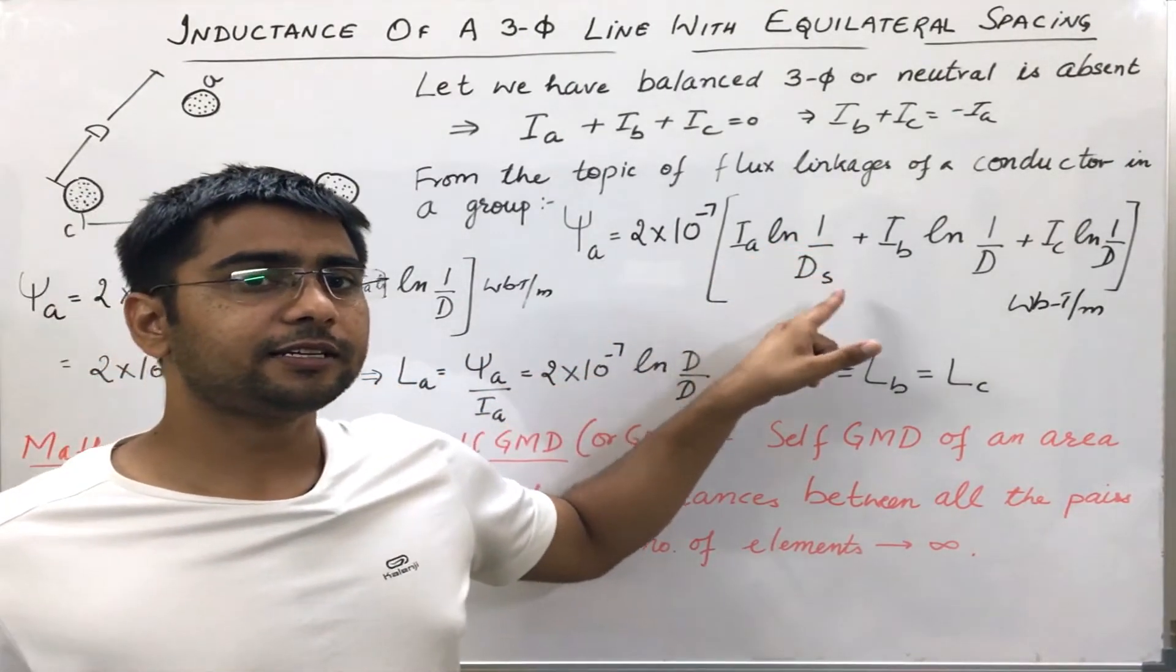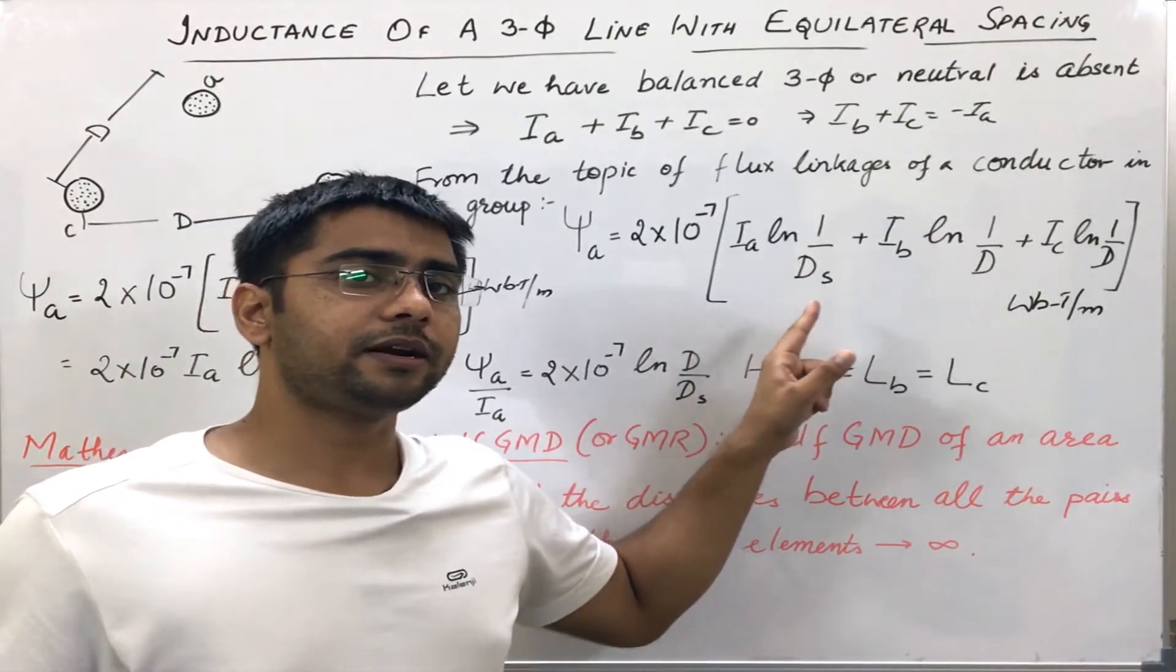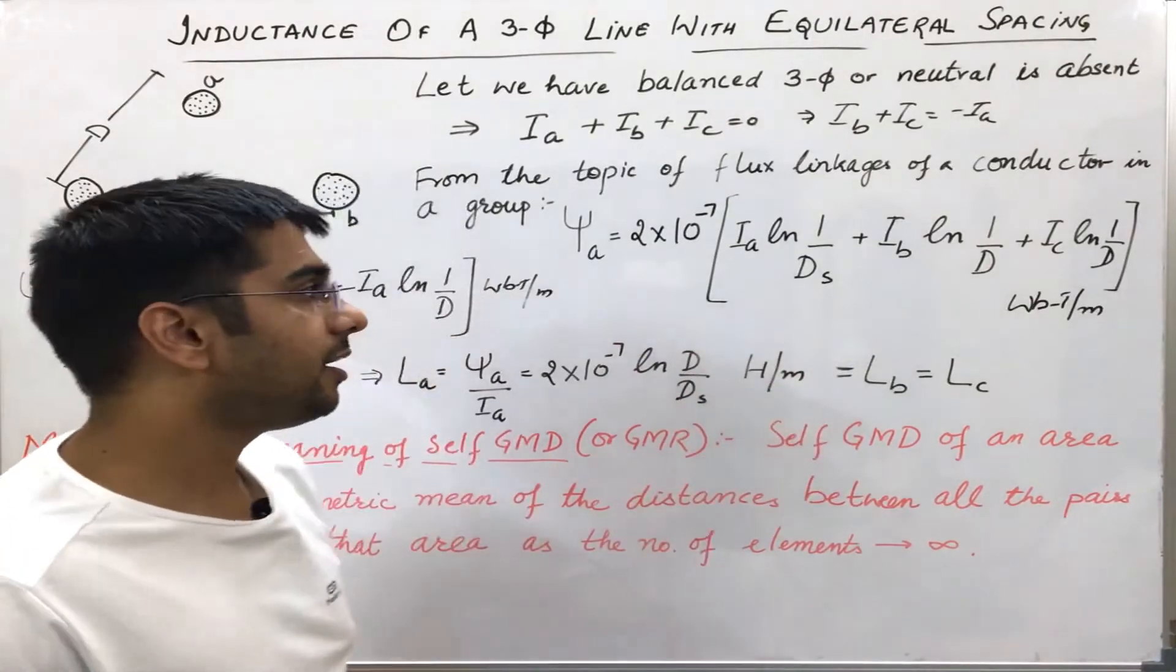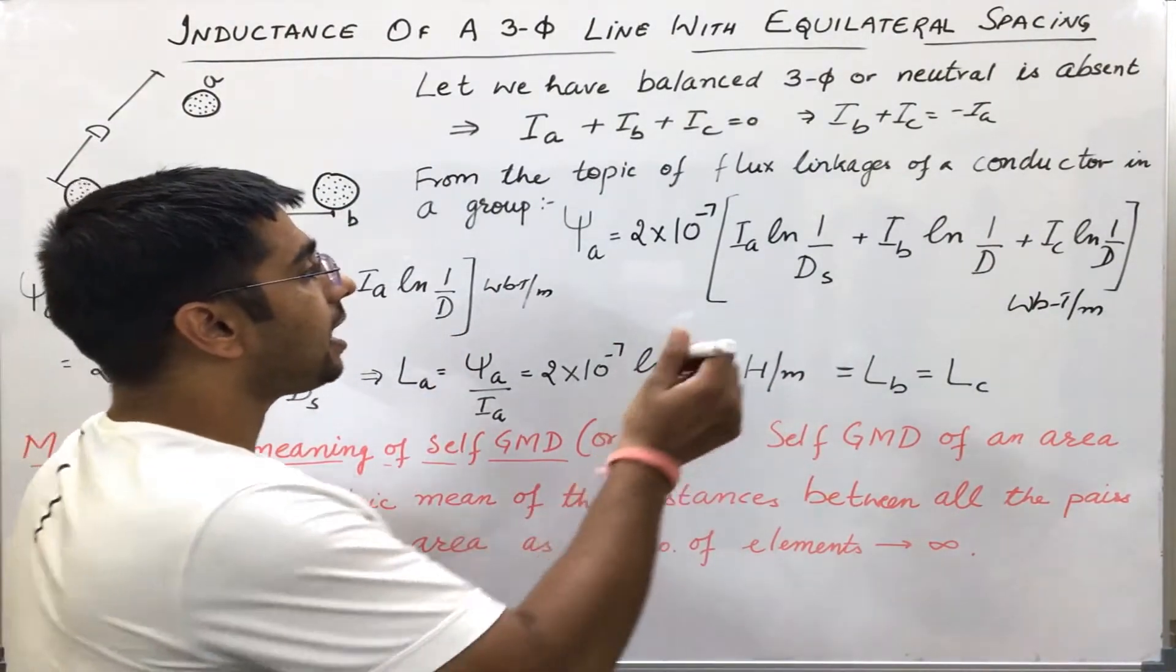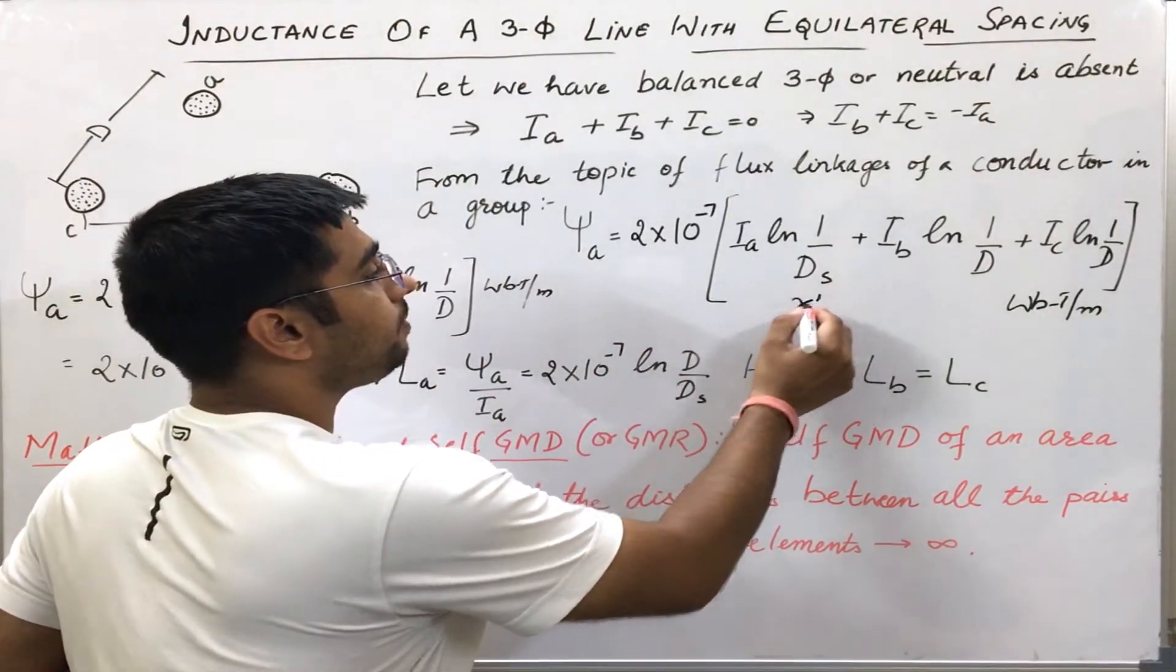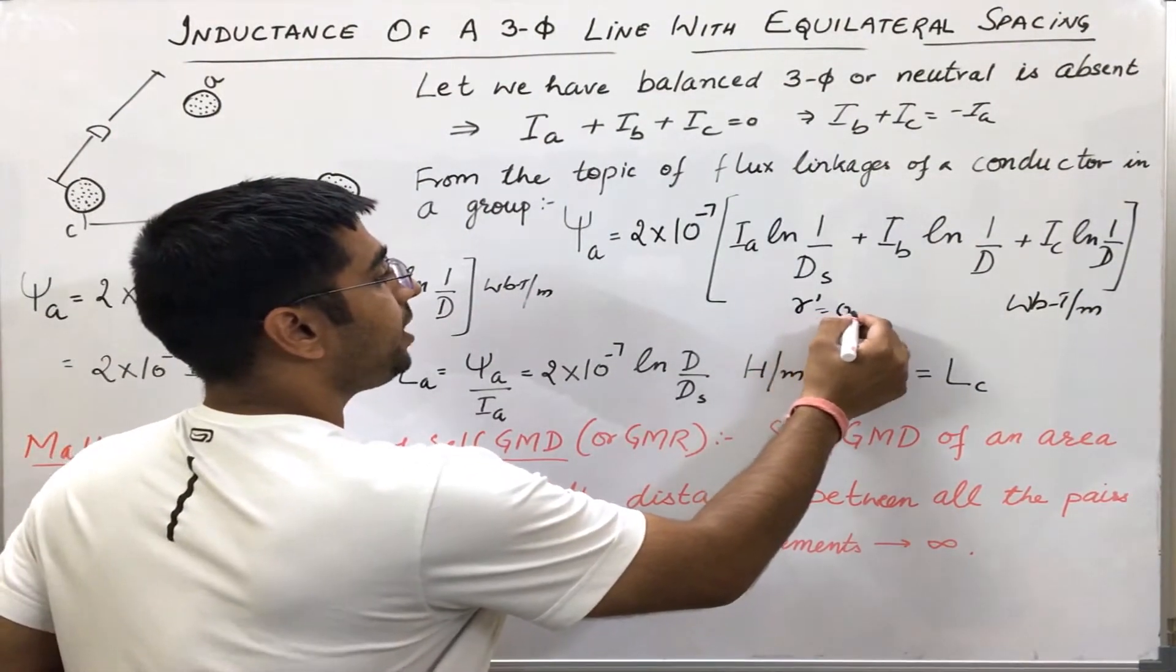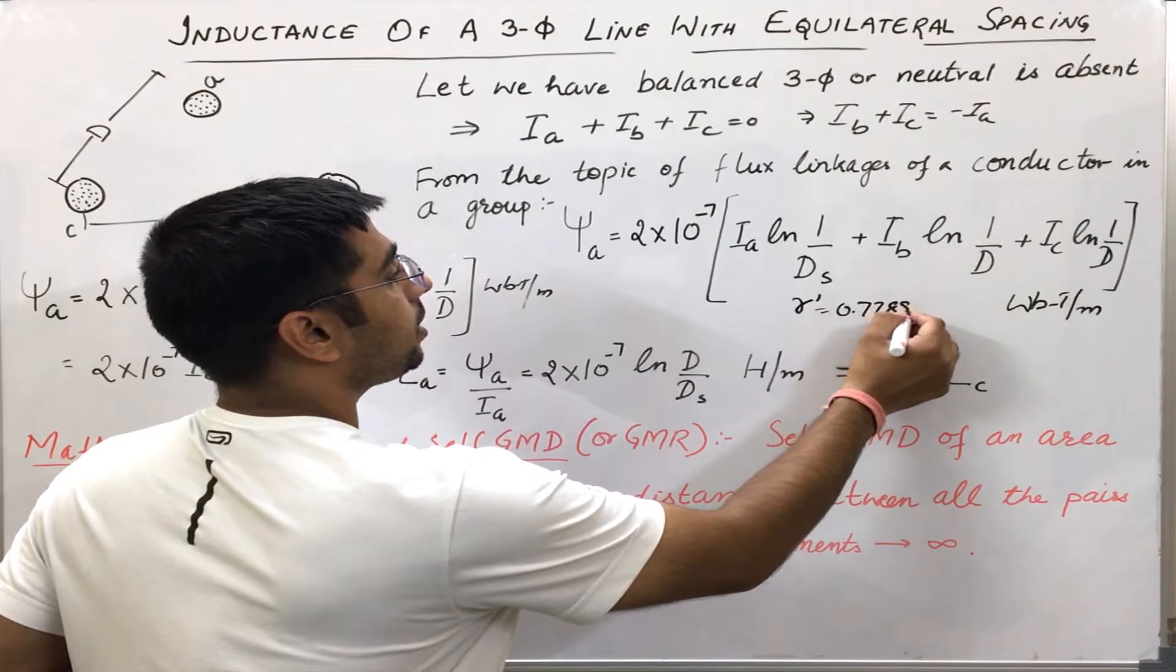ds is simply the geometric mean radius of that conductor. If it is a solid conductor, then we would have written R dash in place of ds, where R dash is simply 0.7788 R, where R is the radius of that solid conductor.